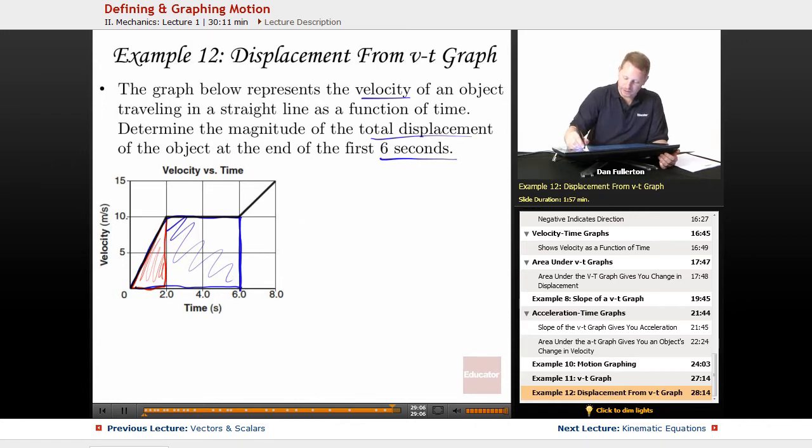So, we've got the area of the triangle, one half base times height, or one half times our base, 2 seconds, times our height of 10 meters per second, is going to be one half times 2 times 10. 10 in seconds versus seconds in the denominator, meters.